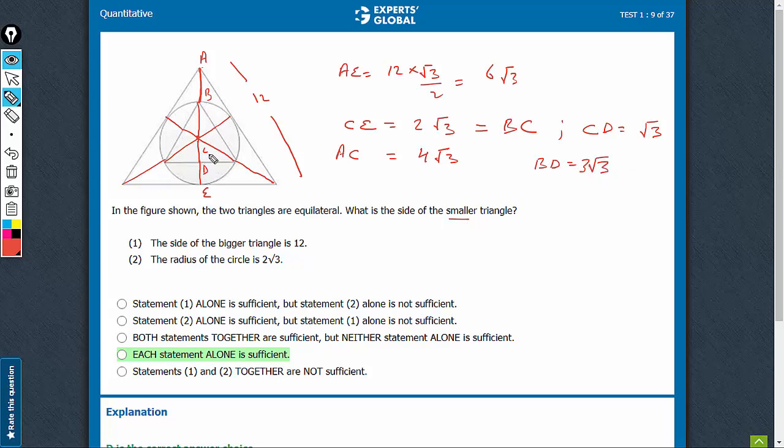And if this is known, again, the same thing. This is 60 degrees. This is 90 degrees. And therefore, the side of the triangle can be determined. So let's say this is F. So BF into root 3 upon 2 is equal to 3 root 3. And therefore, BF can be determined that BF is equal to 6.